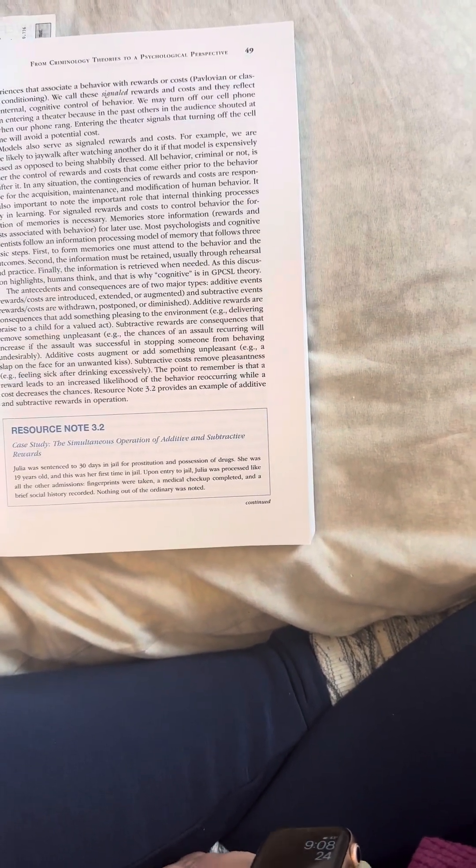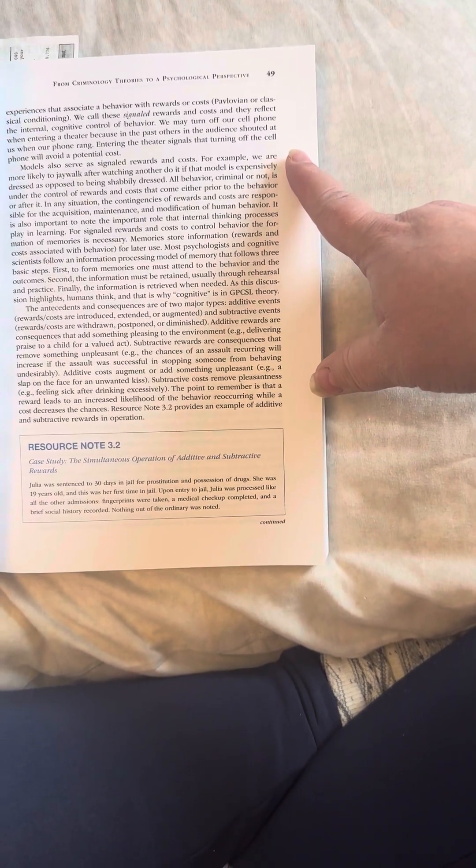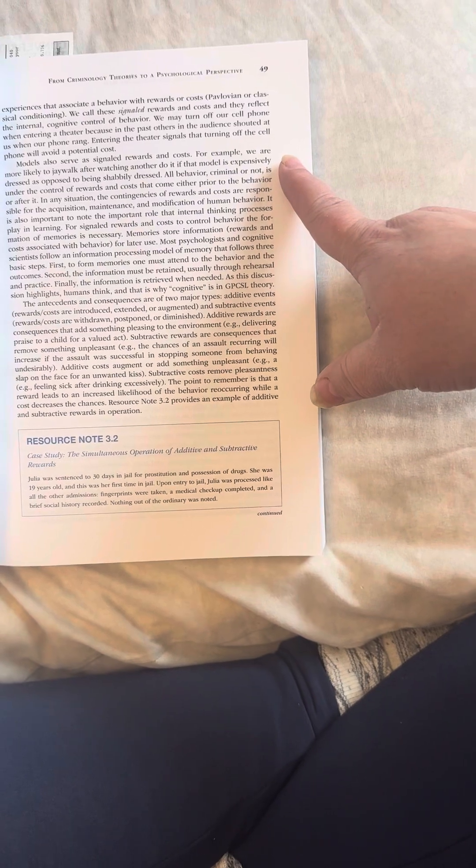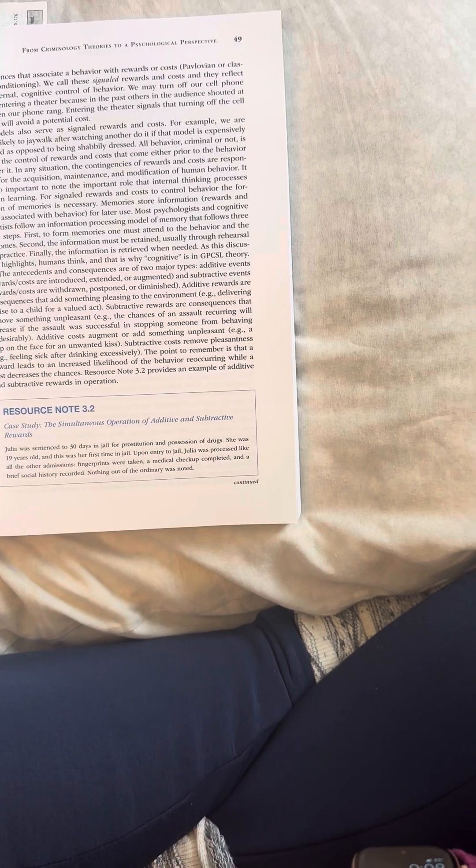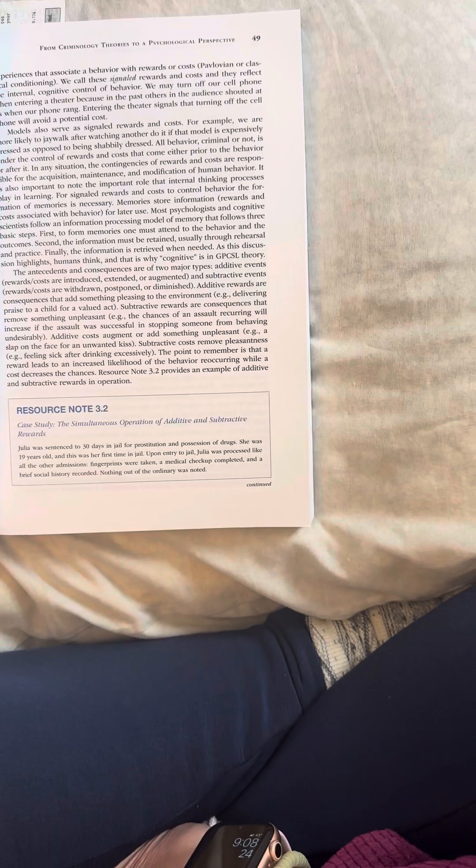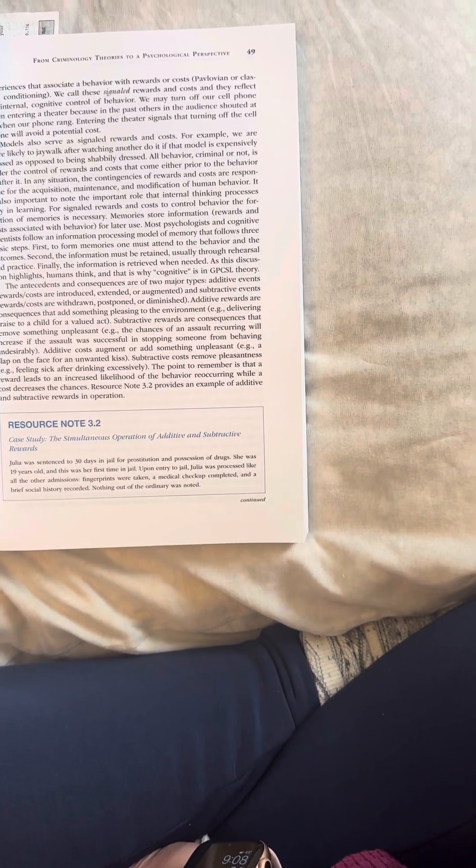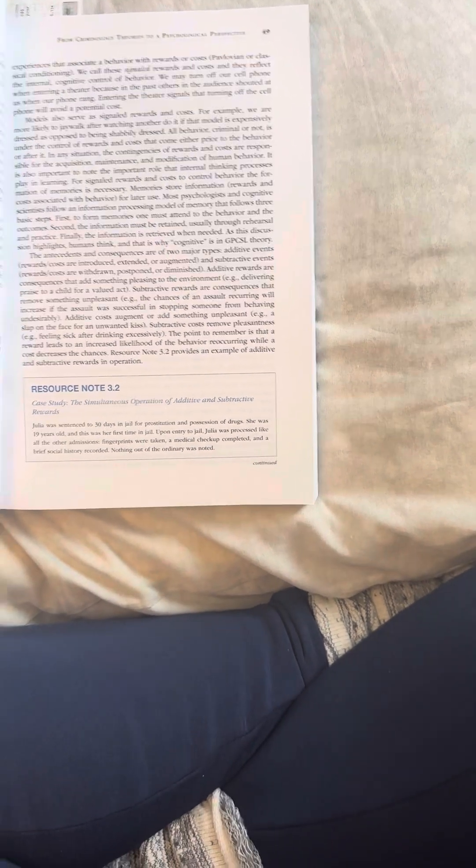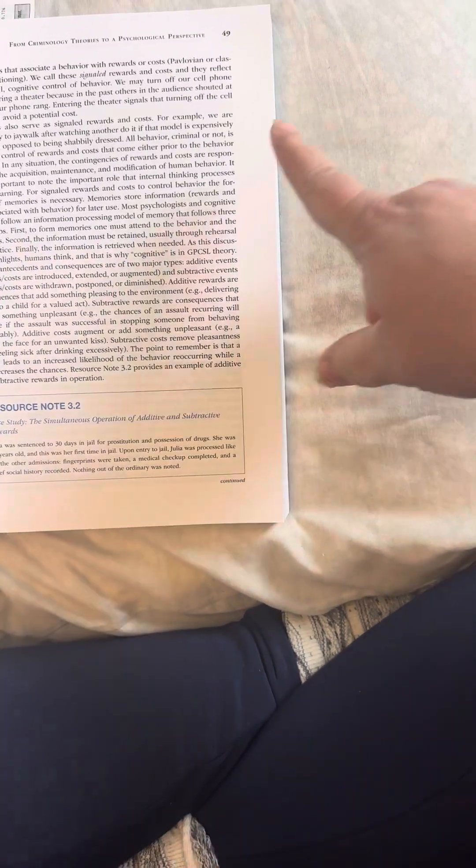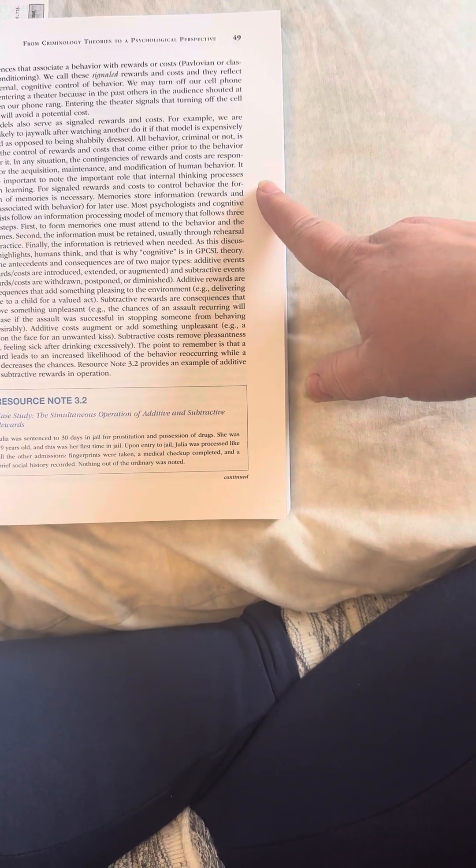We call these signal rewards and costs and they reflect the internal cognitive control of behavior. We may turn off our cell phone when entering a theater because in the past others in the audience shouted at us when our phone rang. Entering the theater signals that turning off the cell phone will avoid a potential cost. Models also serve as signaled rewards and costs. For example, we are more likely to jaywalk after watching another if that model is expensively dressed as opposed to being shabbily dressed. All behavior, criminal or not, is under the control of rewards and costs that come either prior to the behavior or after it.